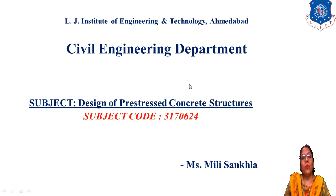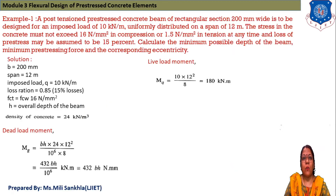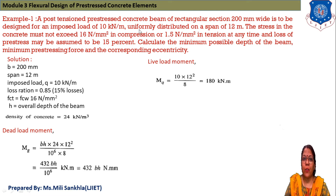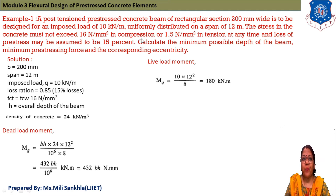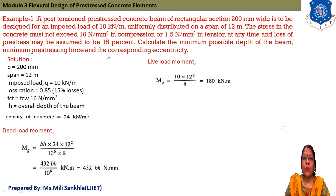Good morning students, myself Mili Sankhla. Today our subject is Design of Prestressed Concrete Structures. We solve an example of a post-tensioned prestressed concrete beam of rectangular section, 200 mm width, to be designed for an imposed live load of 10 kN/m, uniformly distributed on a span of 12 meters. The stress in concrete must not exceed 16 N/mm² in compression or 1.5 N/mm² in tension at any time.